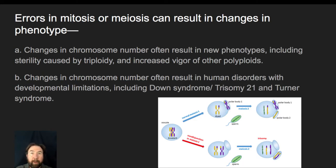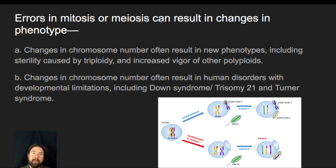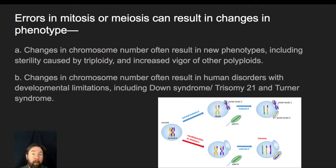Errors in mitosis or meiosis can result in changes in phenotype. Changes in chromosome number result in new phenotypes, including sterility caused by triploidy and increased vigor from other polyploidies. When there's an error in chromosome number, particularly in meiosis, you can have situations such as trisomy 21 — Down syndrome — or Turner syndrome, where one individual produces a gamete that lacks a sex chromosome, and the other partner provides an X chromosome, resulting in an individual born with only one X chromosome and no second sex chromosome.